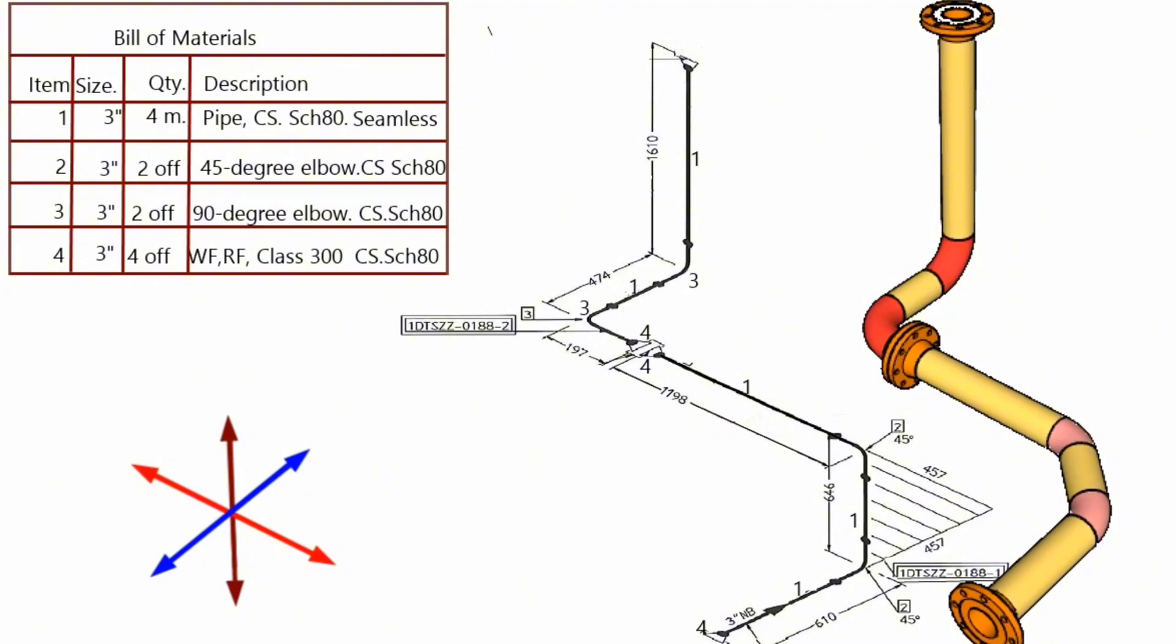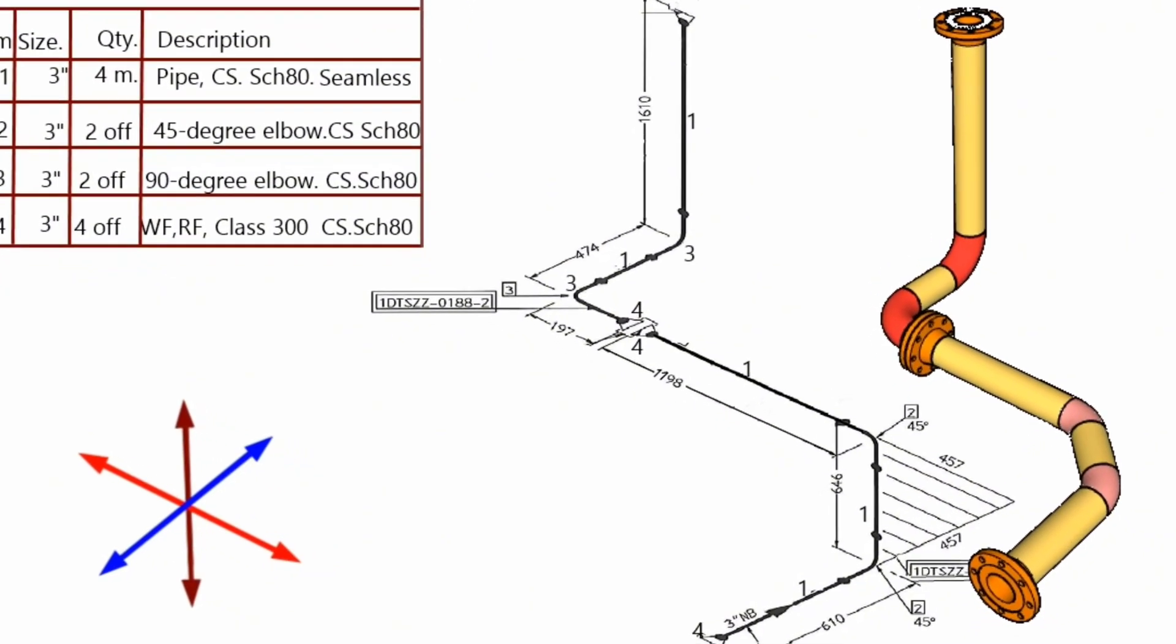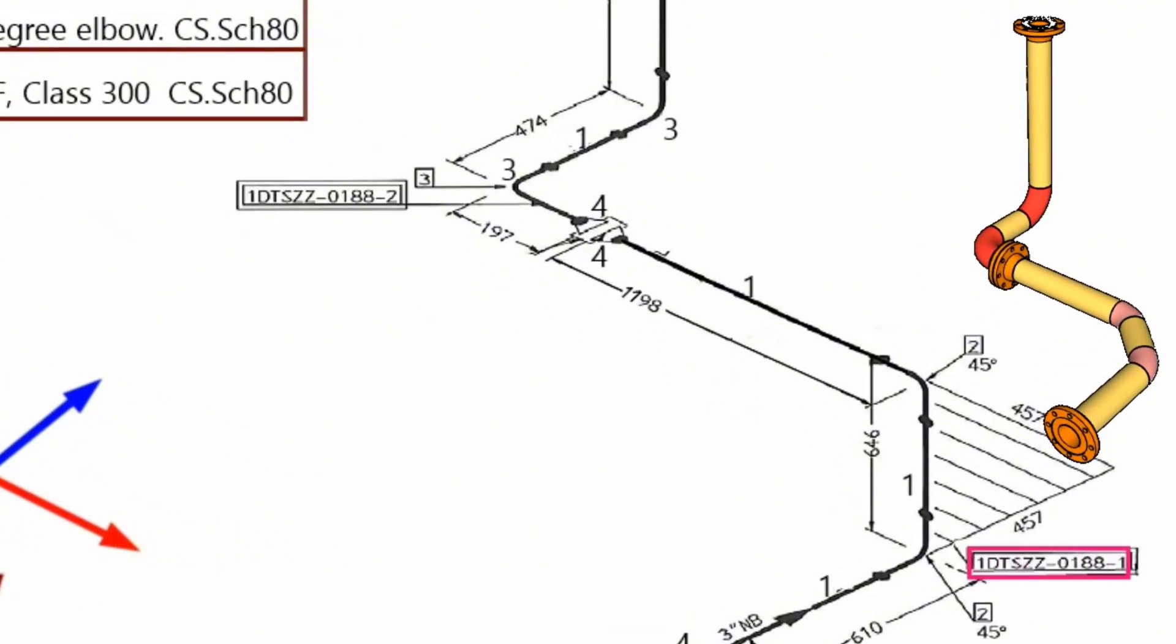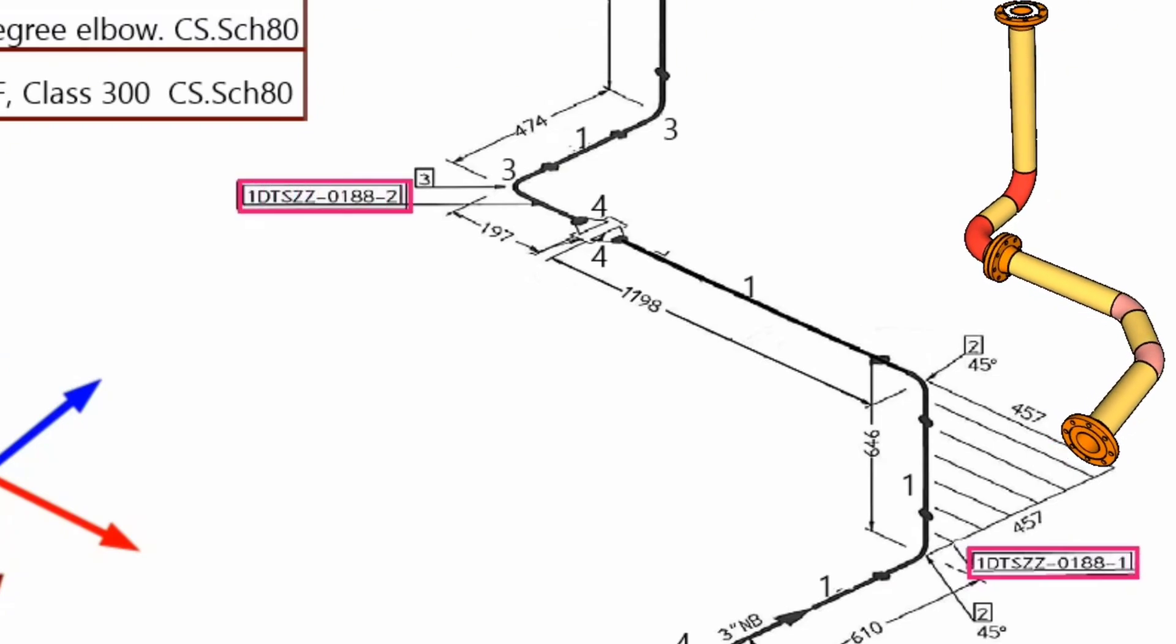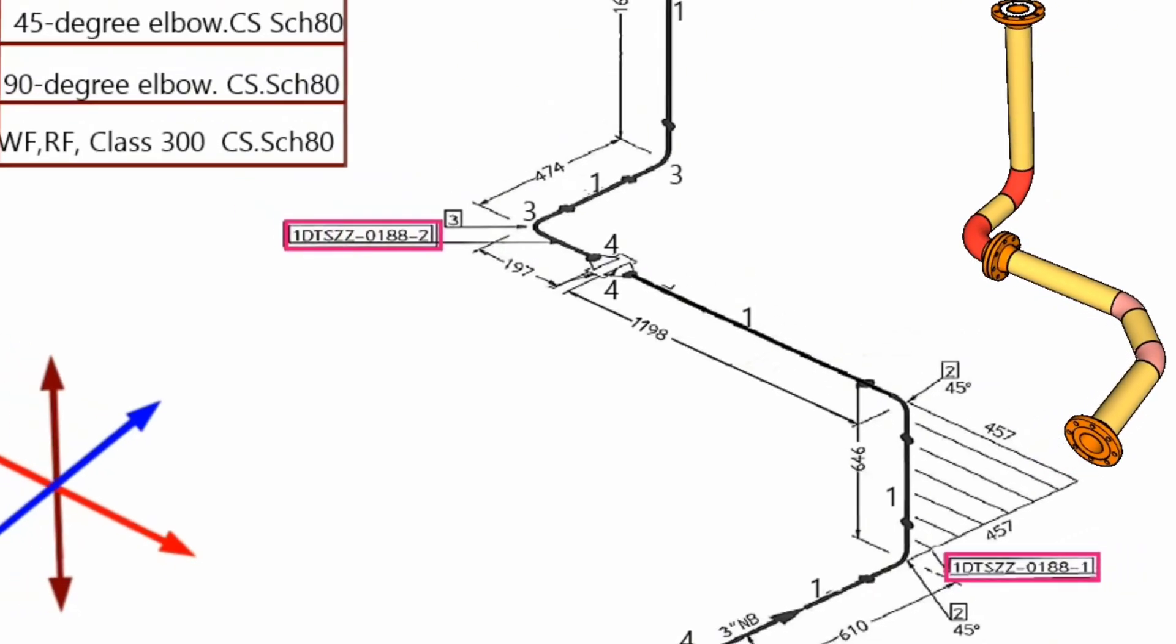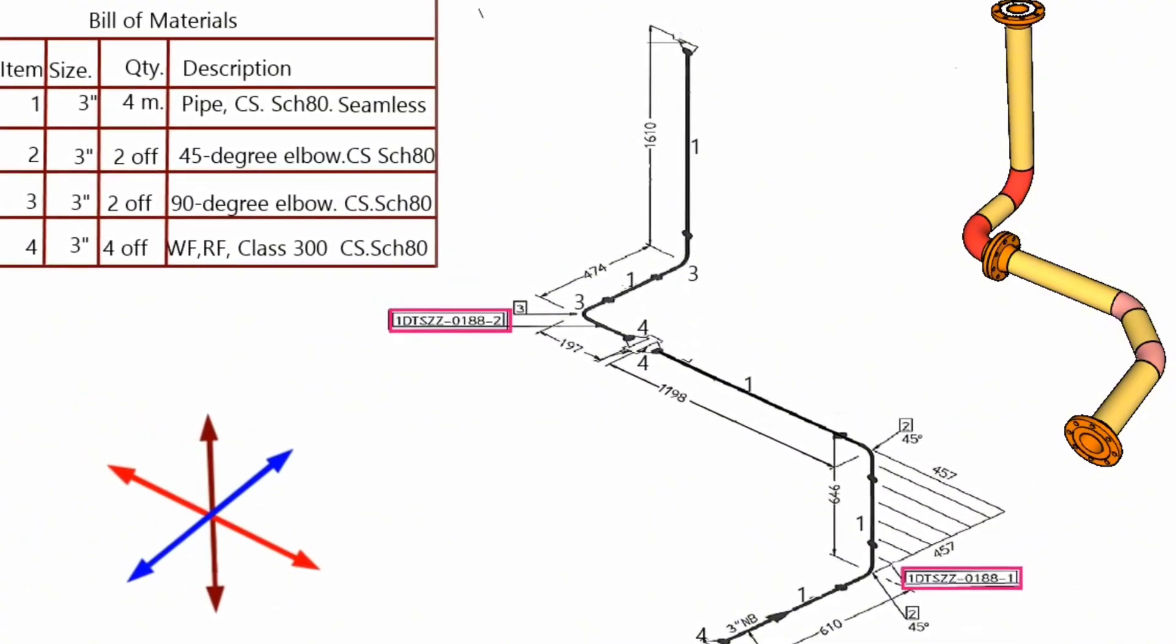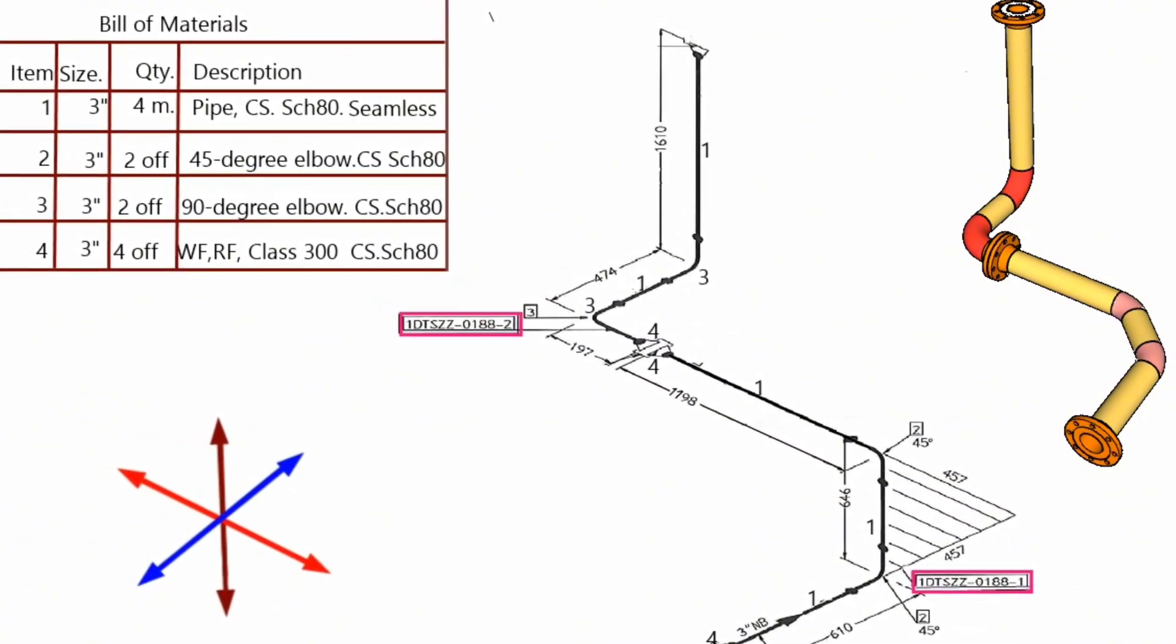This pipeline consists of two pipe spools, numbers are 1DTSCZ0188-1 and 1DTSCZ0188-2. Let's start first to learn bill of materials for use fabrication of this pipeline.